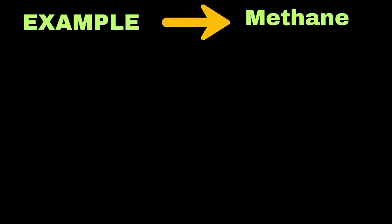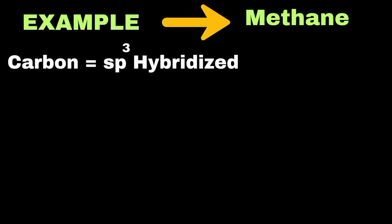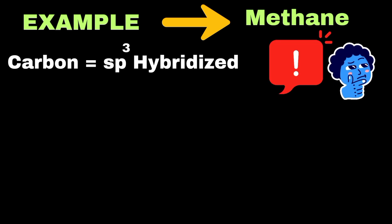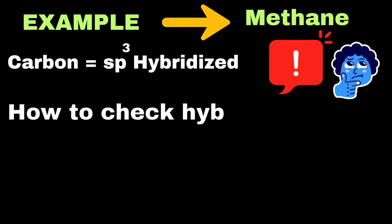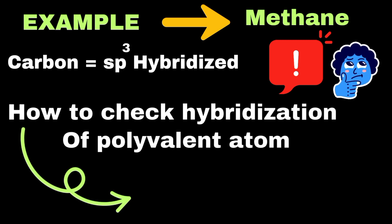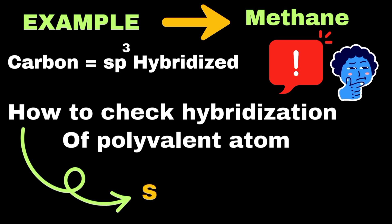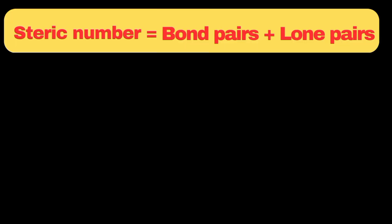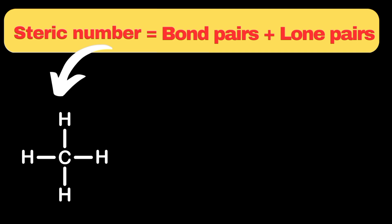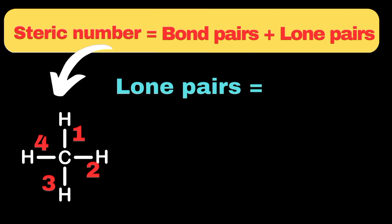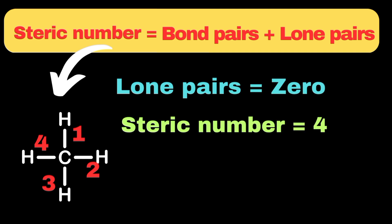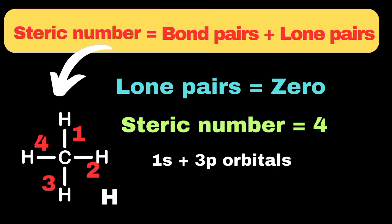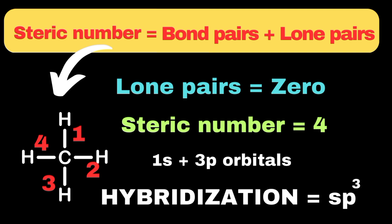Let's take the example of methane. The hybridization of carbon in methane is sp3. To check the hybridization of the central polyvalent atom in a molecule, we need to count the total steric number of the polyvalent atom. The steric number refers to the total number of bonded and non-bonded electron pairs of that atom. Methane has four single bonds and no lone pair on the carbon atom, so its steric number will be four, confirming sp3 hybridization since sp3 involves 1s and 3p orbitals.